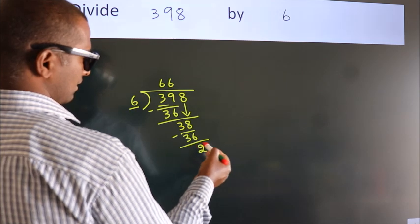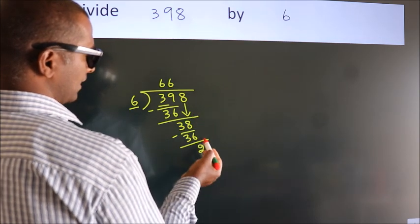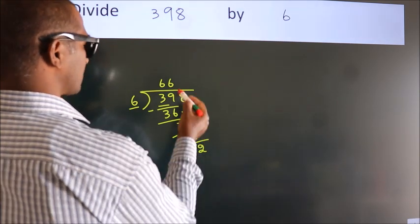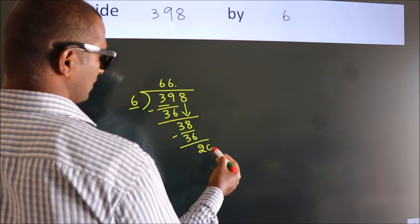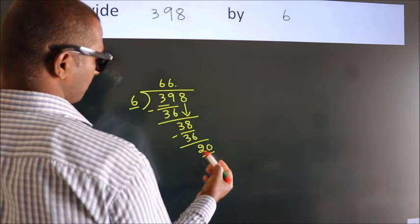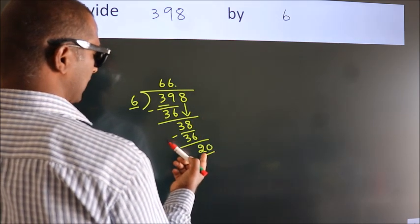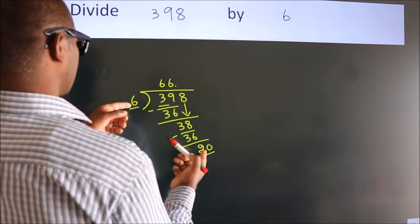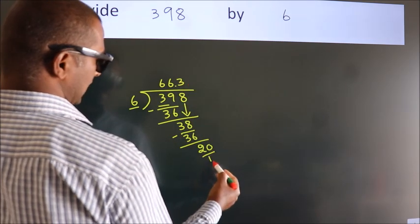After this, no more numbers to bring down. So what we do is put a dot and take 0, giving us 20. A number close to 20 in the 6 table is 6×3=18.